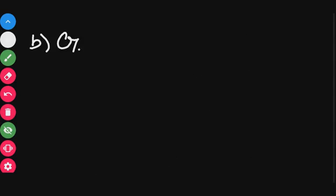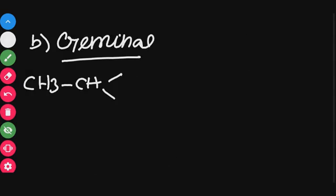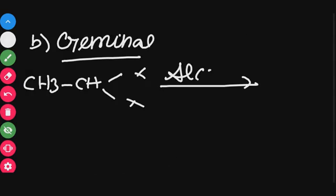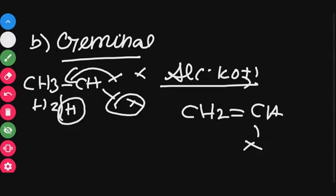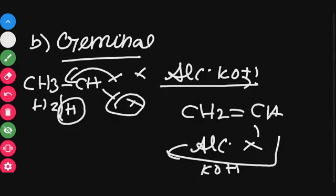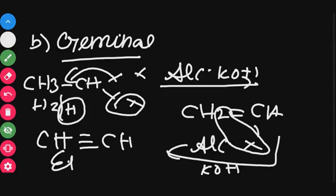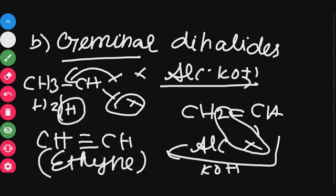The second method is from geminal dihalides. In geminal dihalides, two halogen atoms are on the same carbon: CH₂CHX₂. You treat with alcoholic KOH to remove HX, giving CH₂=CX₂, then treat again with alcoholic KOH to remove another HX, and you get ethyne — CH triple bond CH.